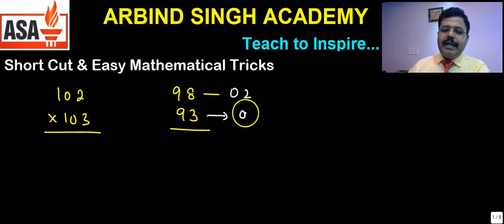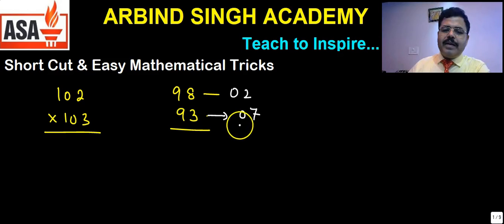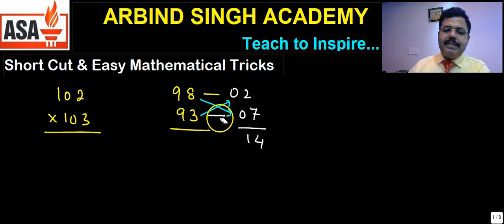Here 3, 7 less than 100, so write 7 there. Now product of these two you need to write: 7 x 2 = 14. And now find the difference of these two - either the difference of these two, that is 98 minus 7, or the difference of these two, that is 93 minus 2.